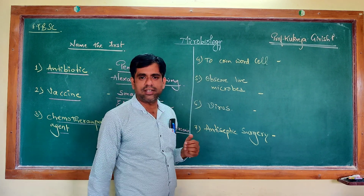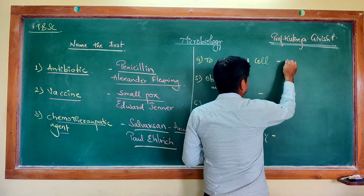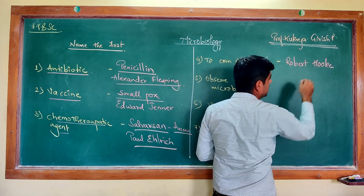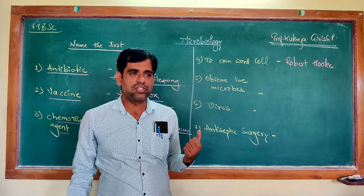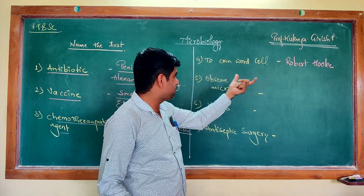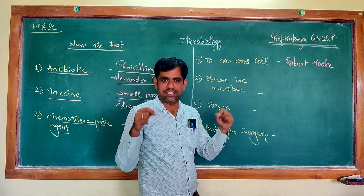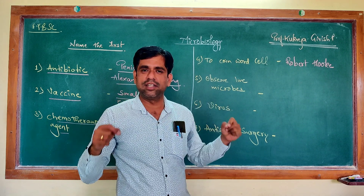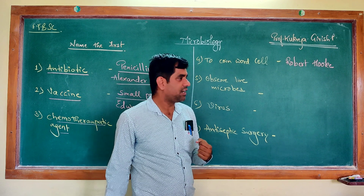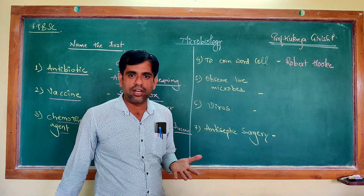The first person to coin the term 'cell,' from where biology begins, was Robert Hooke. In his famous book Micrographia — which was the first official publication of the Royal Society of London — he coined the term 'cell.' He observed cork cells, and they looked like the cells where monks used to live, and therefore he coined this term.